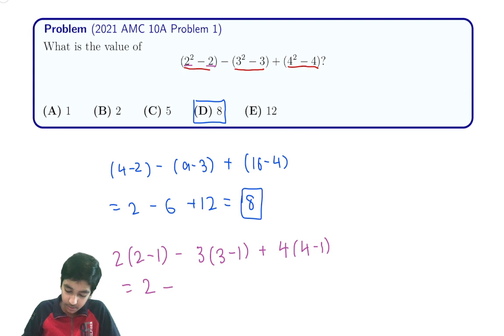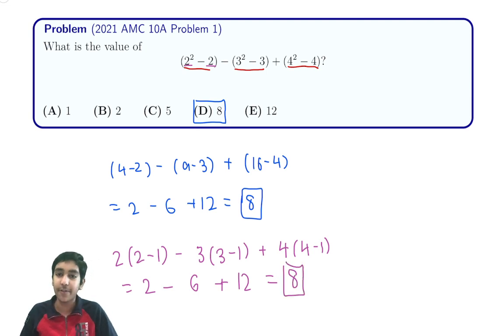minus 3(2), which is 6, plus 4(3), which is 12. This gives us 8 again. Both methods give 8, so we know we're right. Okay, bye everyone! See you next time.